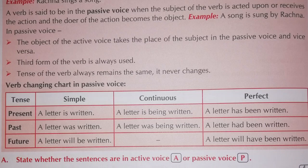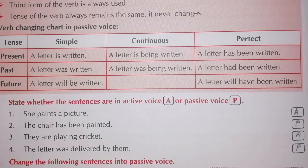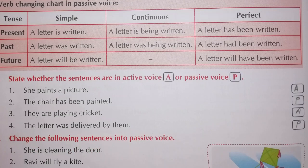State whether the sentences are in active voice or passive voice. Answer: 'She paints a picture' — active voice, because here the subject performs the action. 'The chair has been painted' — but we don't know by whom it was painted, so this is passive voice, because the action was done by the object.